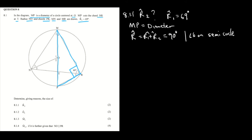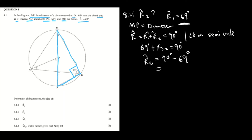We know R1 is 69 degrees, and we want to identify R2. So R1 is 69 degrees plus R2 equals 90 degrees. We transpose the 69, giving us R2 equals 90 degrees minus 69 degrees. Therefore, the answer is 21 degrees.